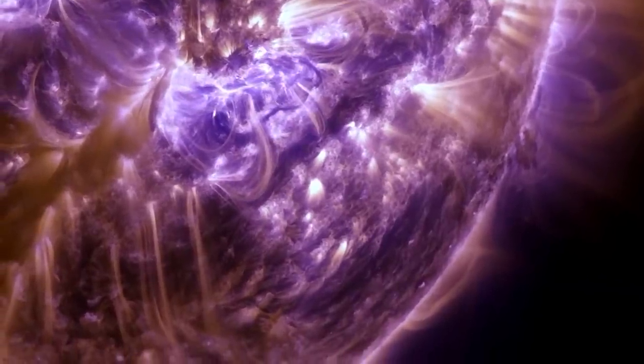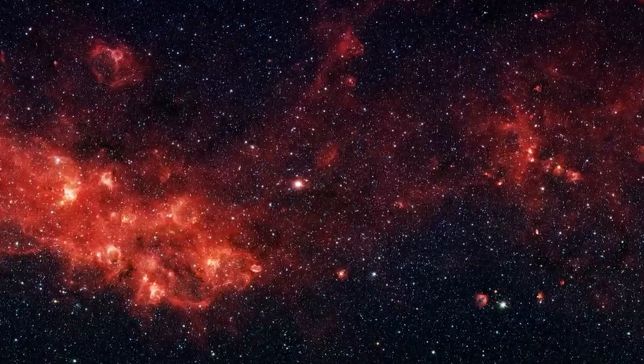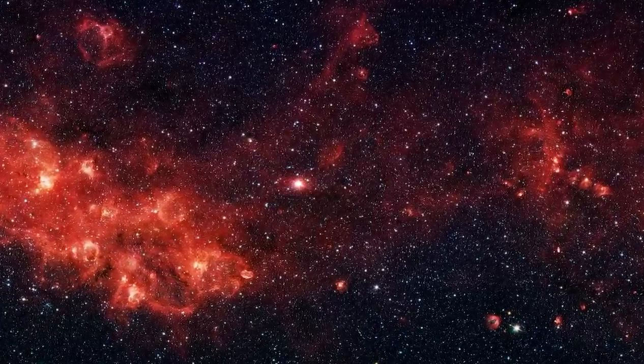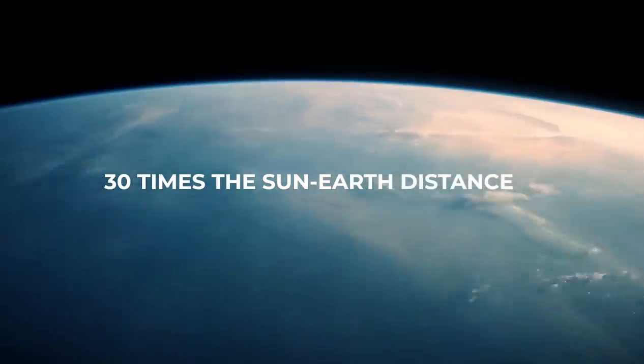Betelgeuse loses about one solar mass every 10,000 years. A nebula surrounds the red star because this material is being ejected unevenly from the star in all directions. A cloud of material 250 times larger than this star surrounds Betelgeuse, and the size of this nebula is also thought to be 30 astronomical units (AU), or 30 times the Sun-Earth distance. The Sun and Neptune, the furthest planet in the solar system, are separated by this distance.